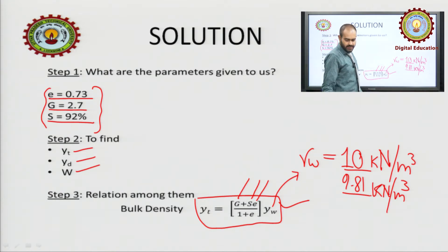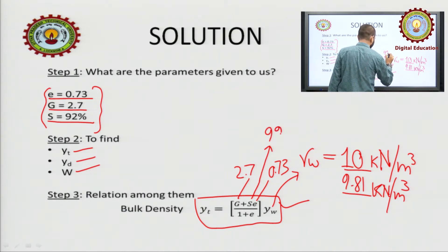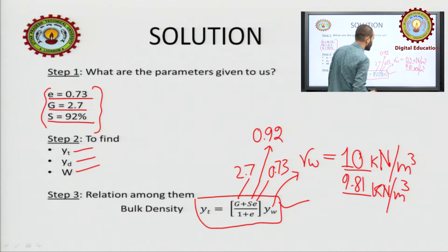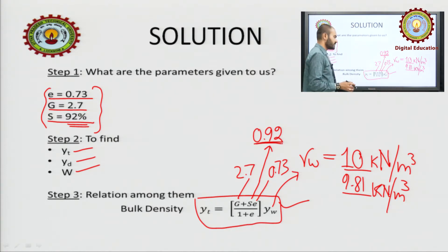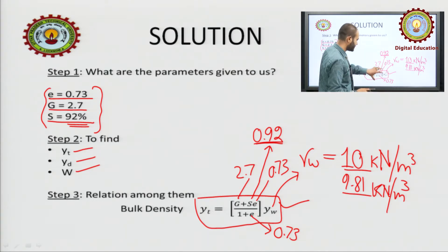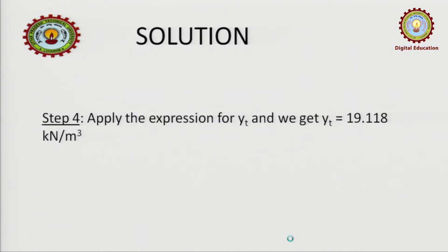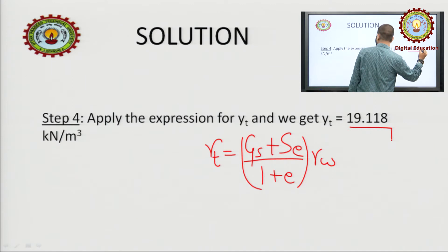Just replace the values: G = 2.7, E = 0.73, and S is given as 92 percent. Here we will not put it in percentage form — we will use it as 0.92, the fraction form. Do not get confused. So gamma T = (2.7 + 0.92 × 0.73) upon (1 + 0.73), multiplied by 9.81. Putting all the expressions gives us 19.118 kilo Newton per meter cube.